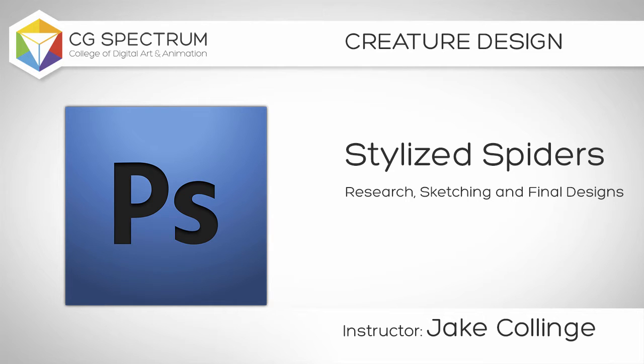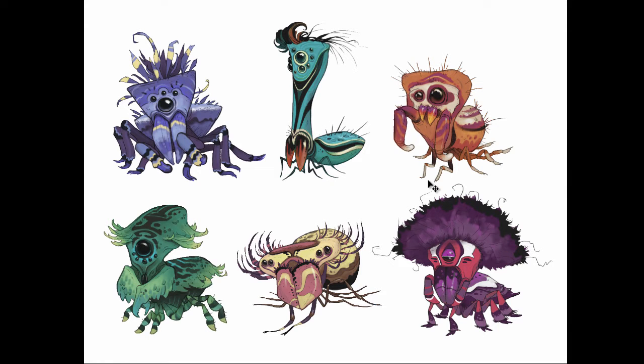Hi, my name is Jake. I'm the department head for concept art and illustration at CG Spectrum. Today we're going to look at creature design, and I'm going to be utilizing these wacky stylized spiders. We're going to discuss the workflow from the very beginning — getting ideas, sketching out all of these various personalities. We'll look at some research, and we're going to look at the final rendering using line and color in two different softwares.